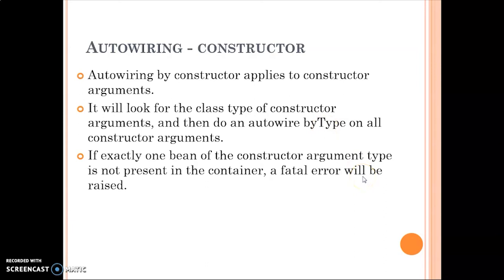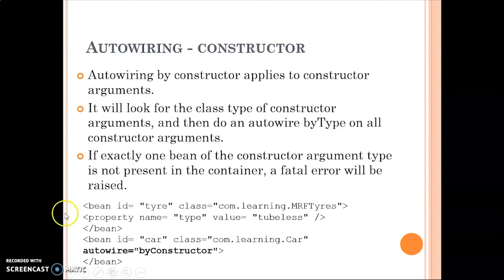If the constructor has multiple arguments — say one of type Tire and another of type Engine — the container will try to find exactly one bean for each type. If more than one bean of the same type exists, it throws an error. If a bean for any parameter type is not found, it also raises an error. The attribute to use is autowire equals to 'constructor'. Be careful when using this if you have multiple arguments.